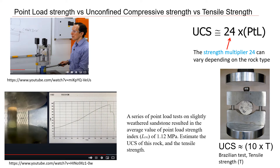Good day everybody. In this video I would like to explain how to correlate data from three different tests. The first test will be the point load index test — please watch my video to know how to do that. The second is an unconfined compression test, also available on my channel. The third test will be the Brazilian test, or tensile strength test — I still don't have this video but I will make one soon.